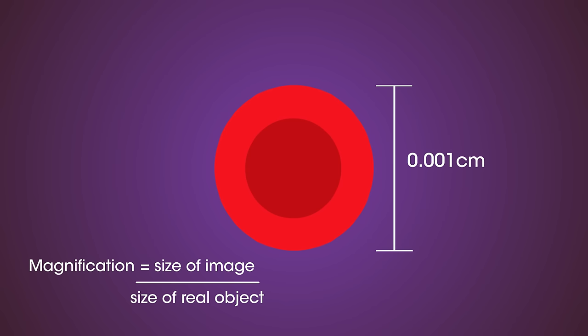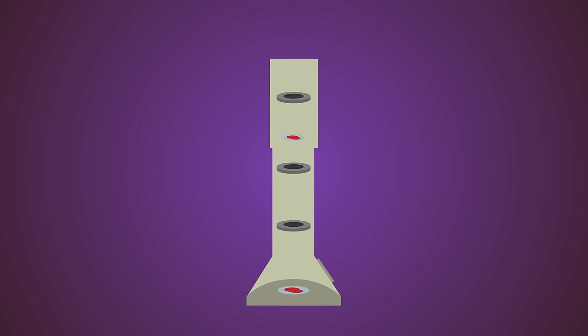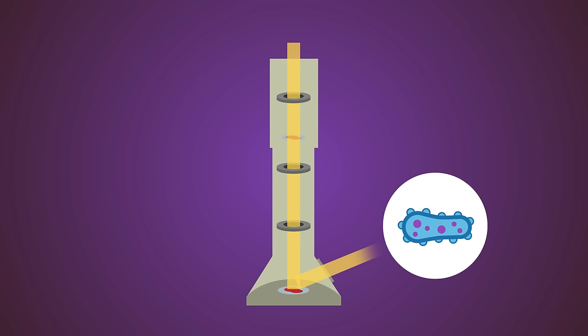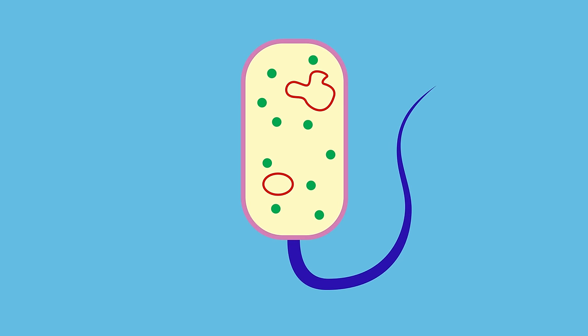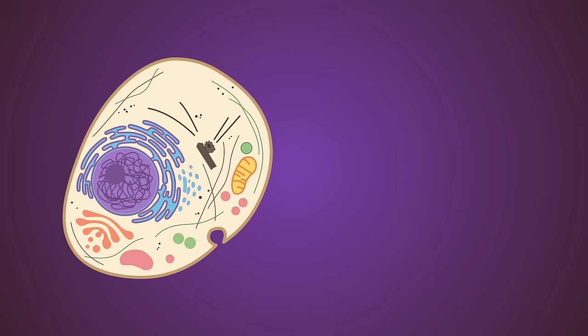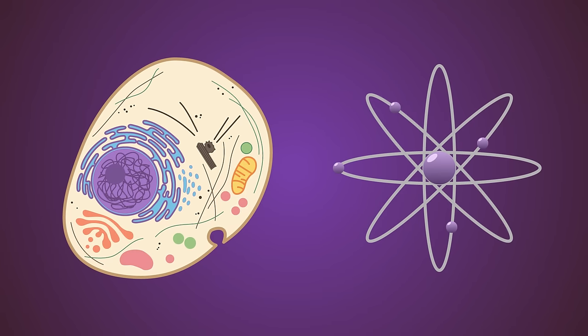Then the magnification used must be 1 ÷ 0.001 = ×1000. The microscopic world has been opened up even further due to the invention of the electron microscope. These use beams of electrons to form images and have much higher magnifications and resolutions than light microscopes. They have enabled scientists to study objects in much more clarity and detail, from cell organelles like the nucleus and membrane to even smaller structures like individual atoms.